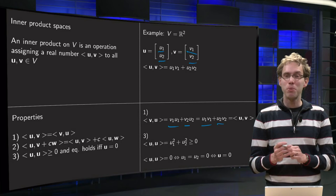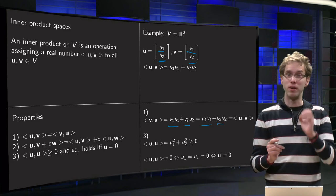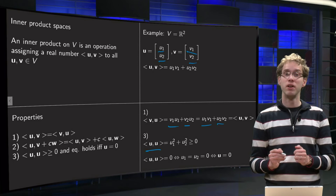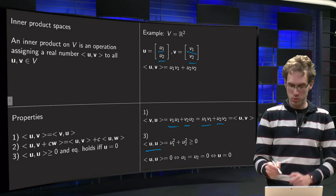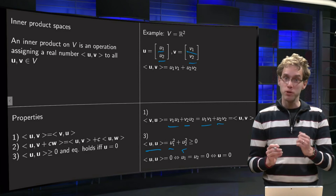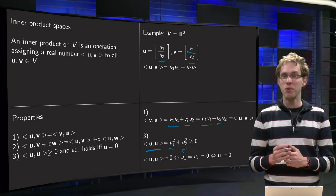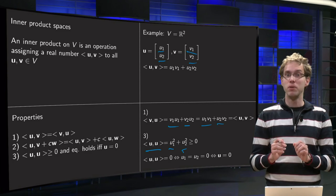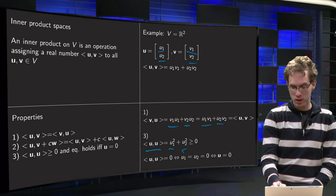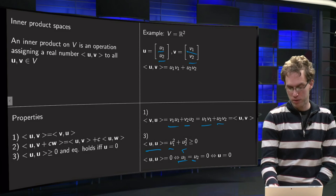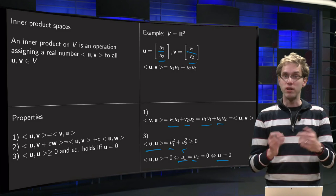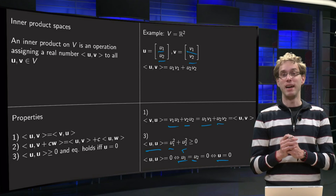The most tricky property is usually the third one. So let us take a look at that one. Well if you take the inner product of u with itself, then you get u₁ times u₁ plus u₂ times u₂. So u₁² plus u₂². And the sum of two squares is always positive. And when is this zero? Well you add two positive numbers, so it is only zero if both of those numbers are zero. So if u₁² is zero and u₂² is zero, so if u₁ is zero and u₂ is zero, so if u is the zero vector. So you see the third property holds for our familiar inner product.